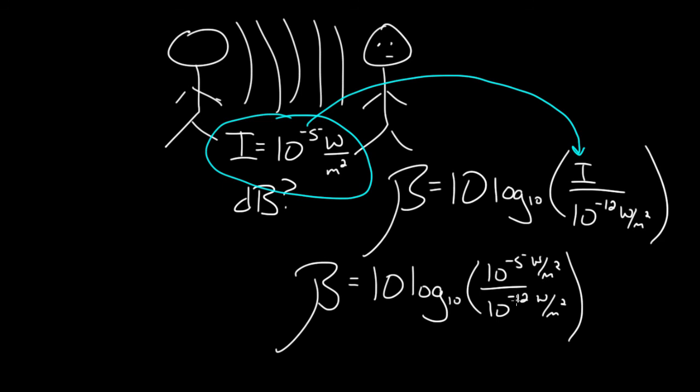Well, what's 10 to the negative fifth divided by 10 to the negative 12th? It turns out that's 10 to the seventh, so I end up with 10 log of 10 to the seventh. Now, I don't like logs, I'll be honest, they freak me out, but I could even do this one, log of 10 to the seventh,